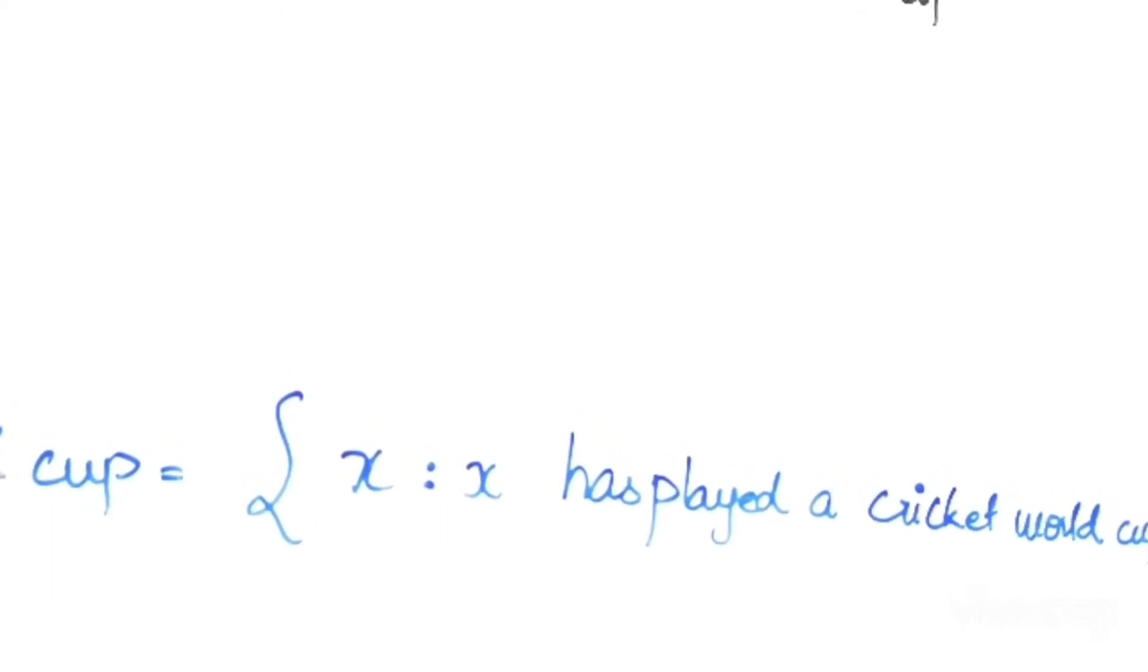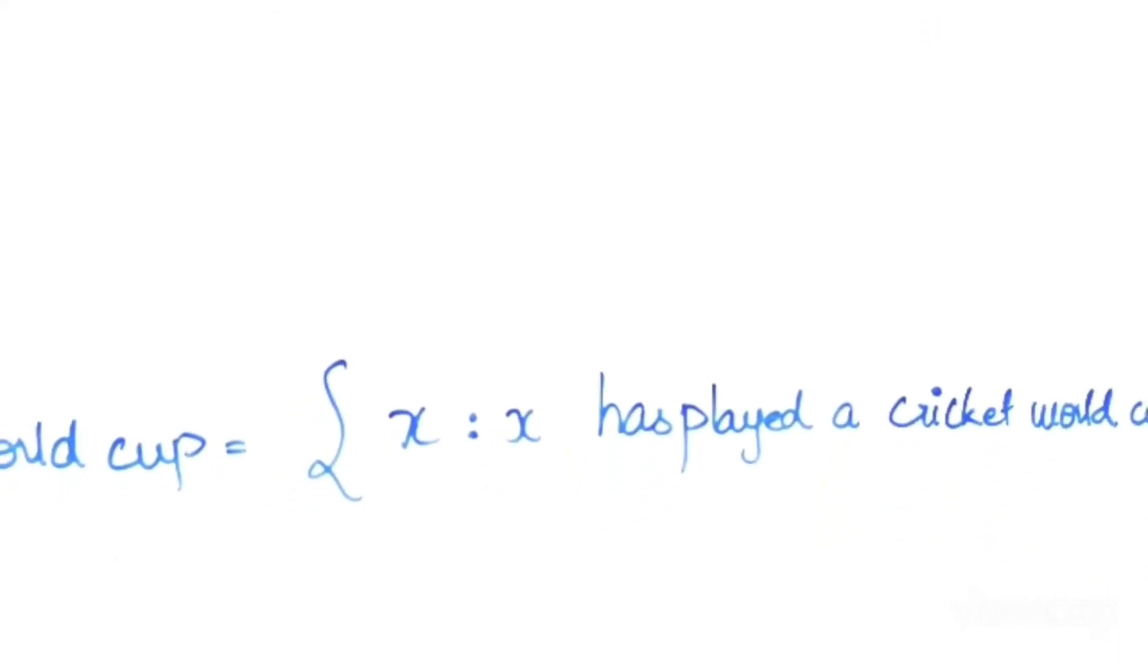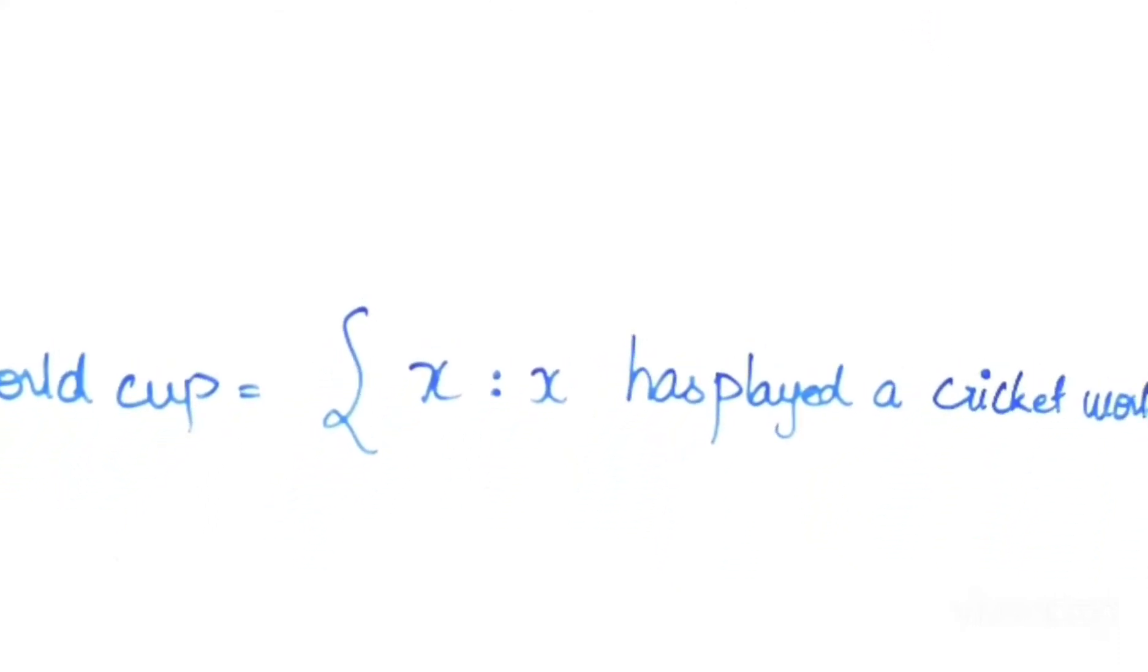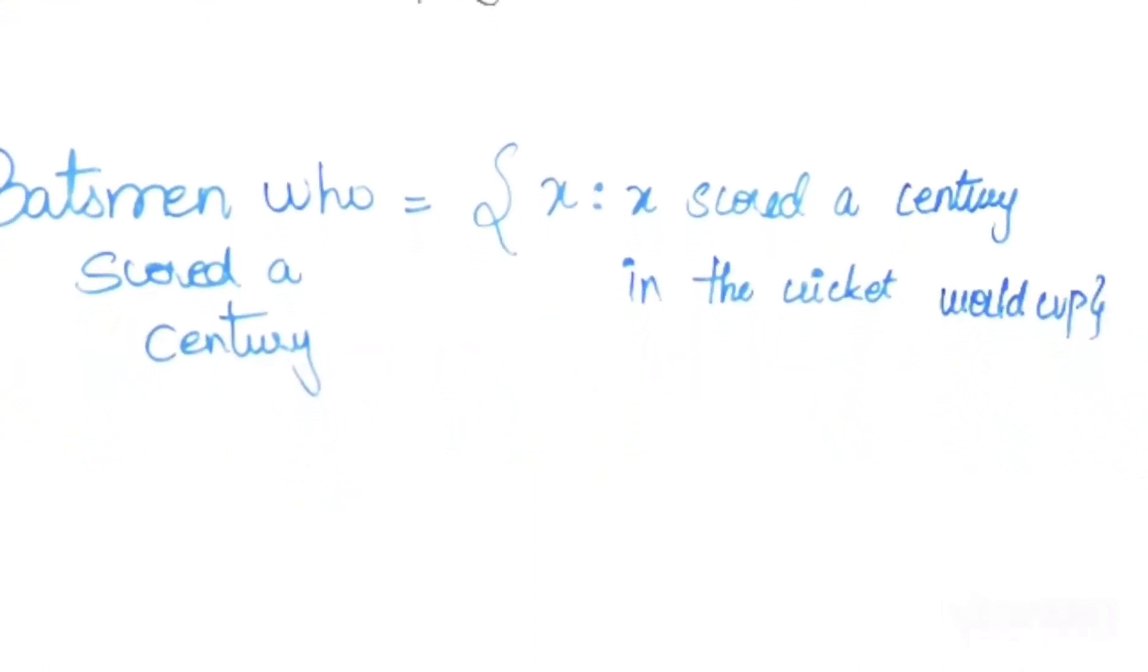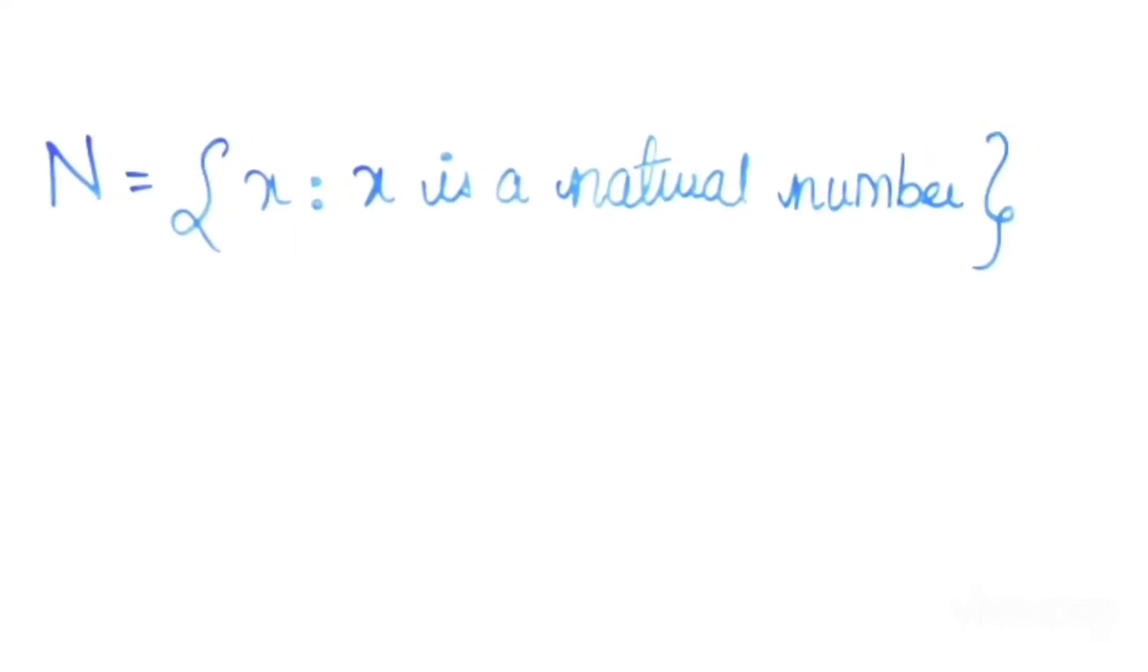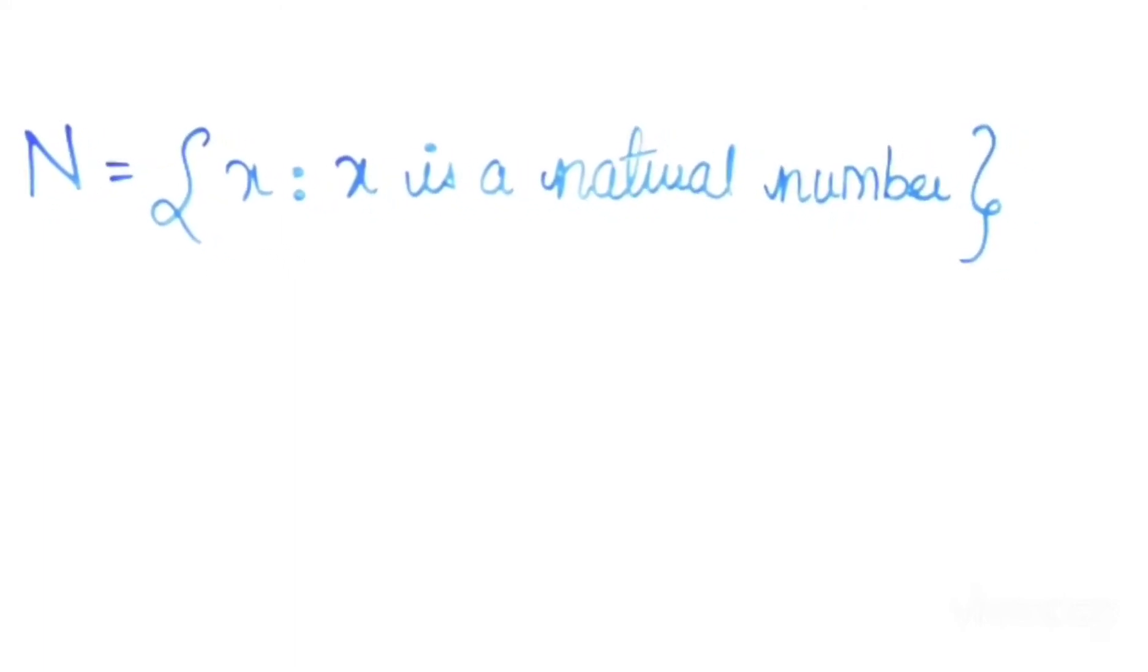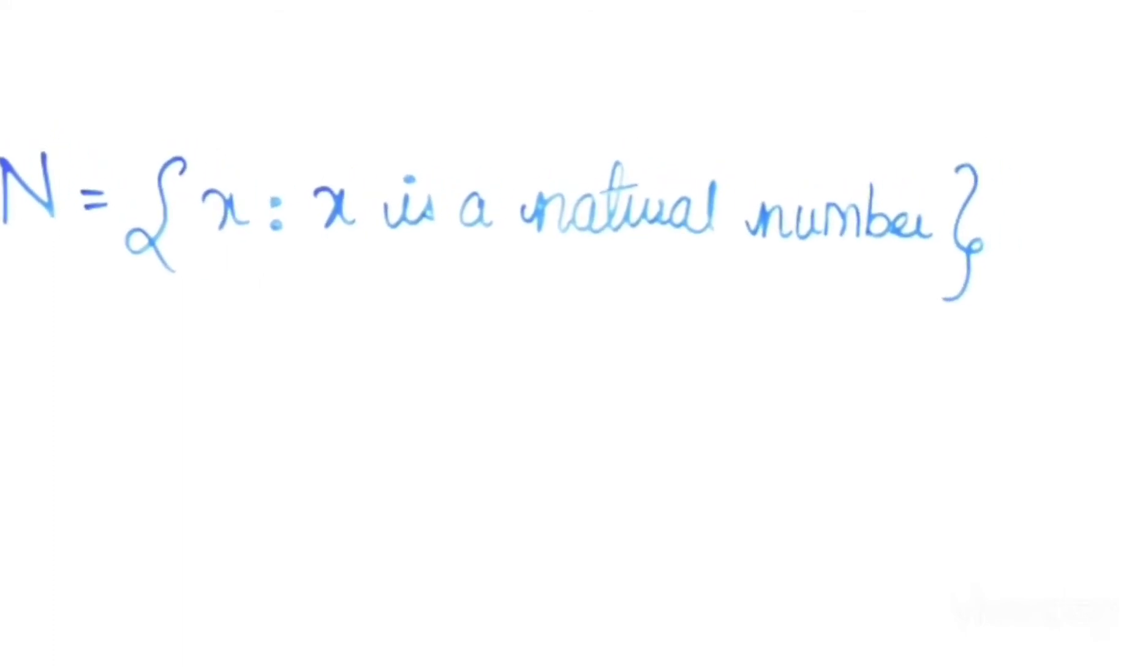If you would write the set of all batsmen who scored a century, we would say, X such that X scored a century in the Cricket World Cup. You could do the same thing with boring mathematical sets like natural numbers too. N is a set of X, such that X is a natural number.